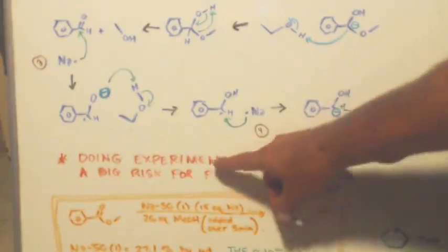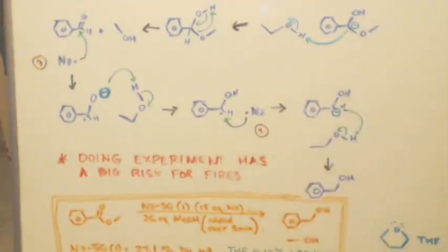Now, I want you to read this and look at it very carefully. It says, doing this experiment has a big risk for fires. This was the only method of doing an ester reduction to make alcohols before lithium aluminum hydride or sodium borohydride. Before those hydrides, this is the way it was done, but you had a big chance of starting a fire with this experiment.